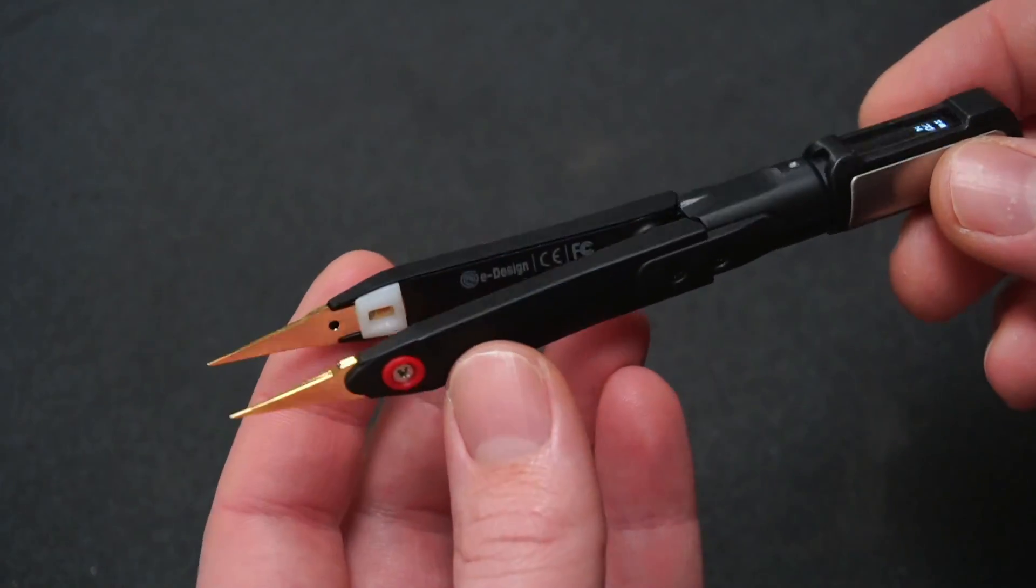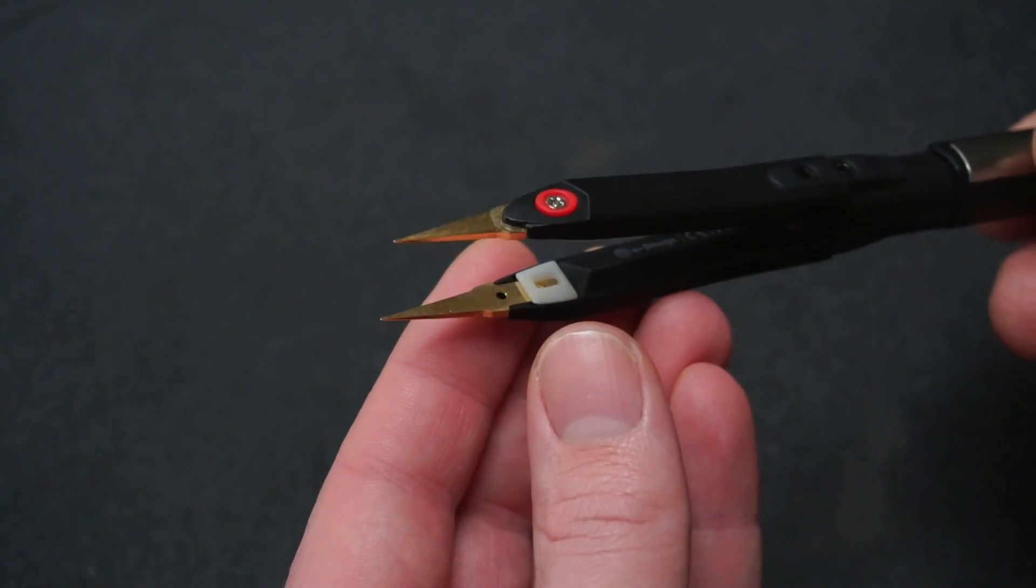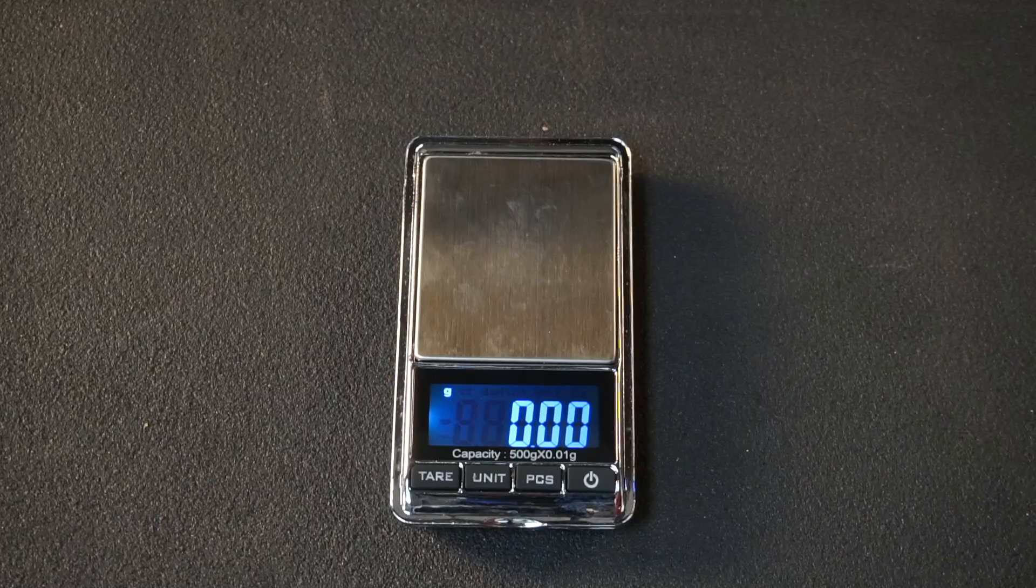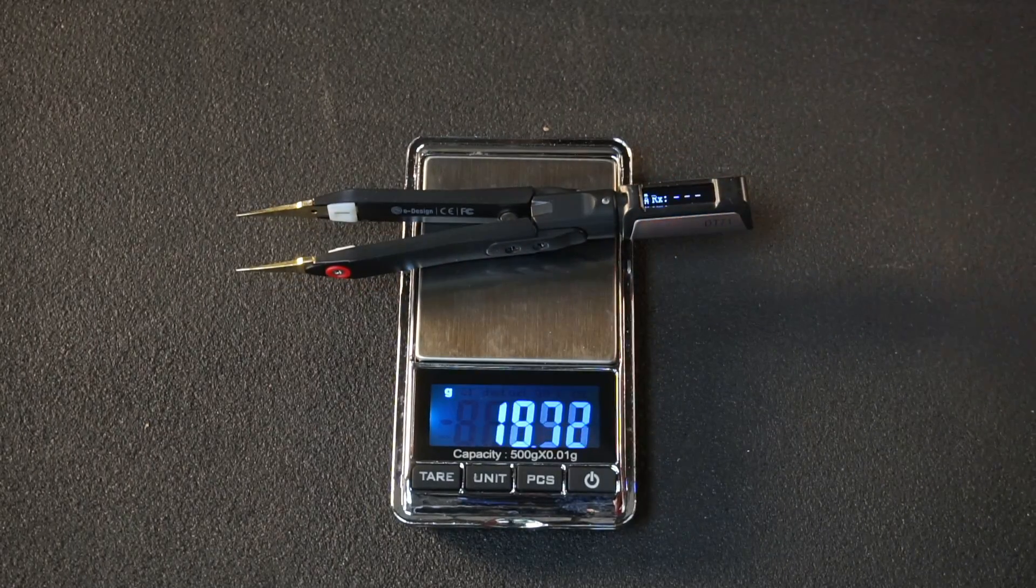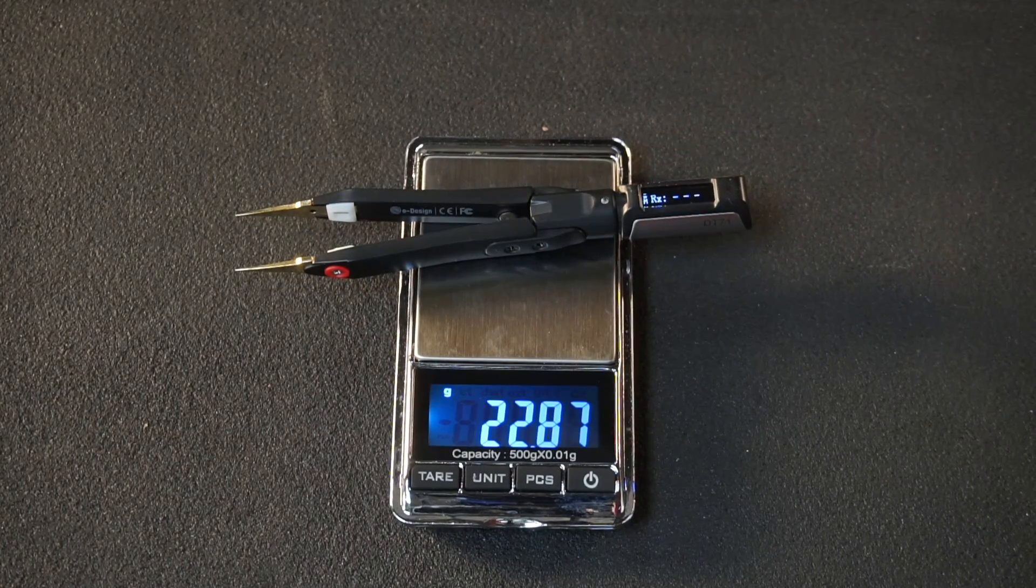The body of the DT-71 is mostly constructed from plastic. It feels good in the hand and is fairly solid for such a lightweight device, weighing in at only 23 grams.